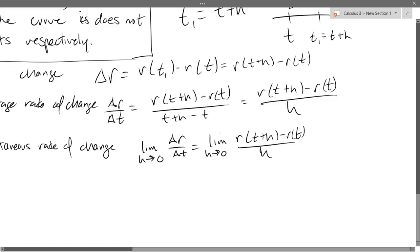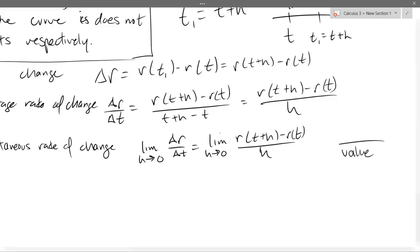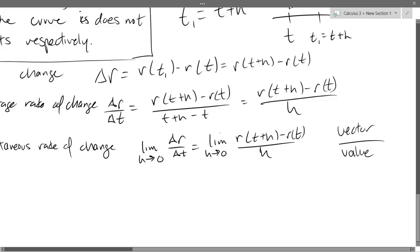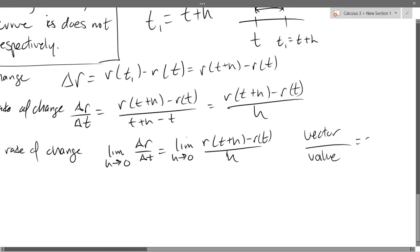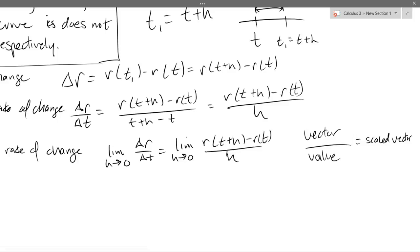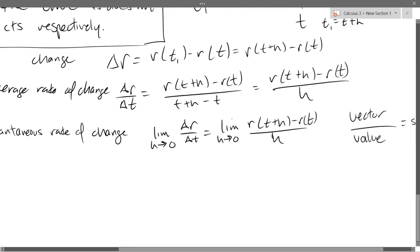What is different, however? What do we get out of this? Do we get a value? Do we get a vector? H is a value. What is R of T plus H minus R of T? It's going to be a vector. So a vector divided by value, we're just scaling a vector now. So the difference is our derivatives are now going to be vectors. We're going to call this R prime of T.